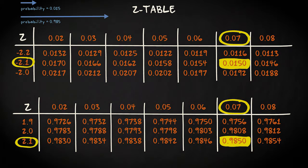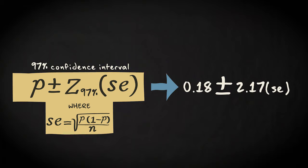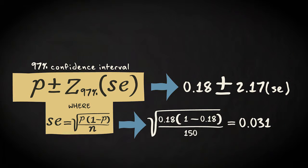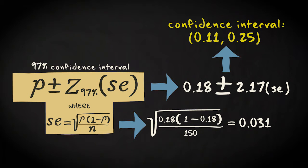So if you go back to the formula, that makes 0.18 plus and minus 2.17 times the square root of 0.18 times 1 minus 0.18 divided by 150. That leads to an interval from 0.11 to 0.25.